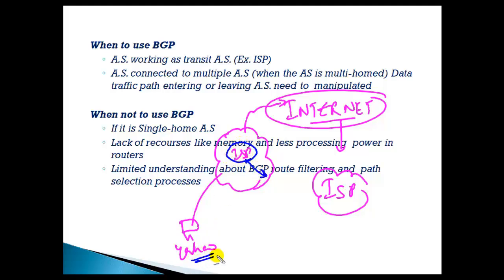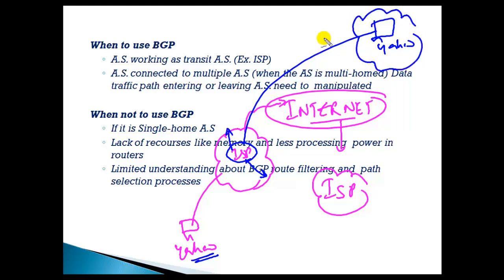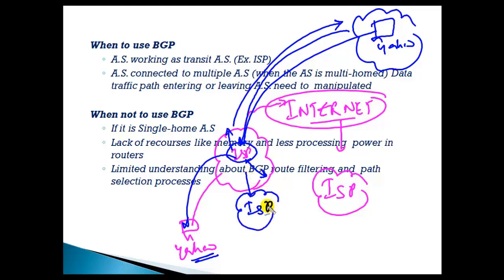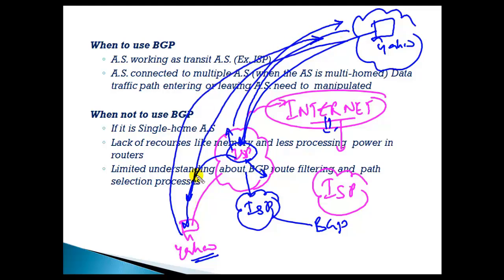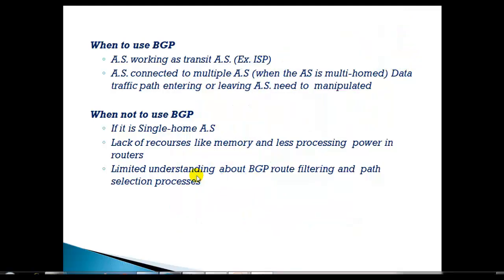The ISP maintains the route of the Yahoo server, which is in a different location — maybe a different company or organization. It sends a request to the Yahoo server and gets the reply back. This means if you are a service provider, you need to maintain the routes of different autonomous systems. You cannot use IGP protocols here because IGP protocols are designed only within the same autonomous system. On the internet you are moving between different AS numbers — maybe five or six of them — to reach that Yahoo server. So if you are an ISP, it becomes mandatory to run BGP.